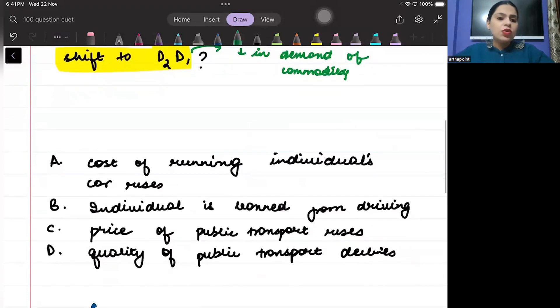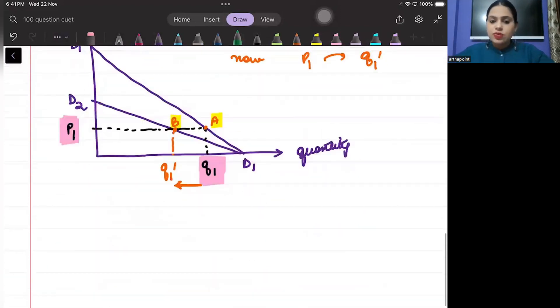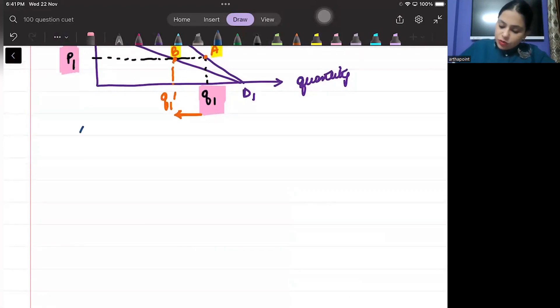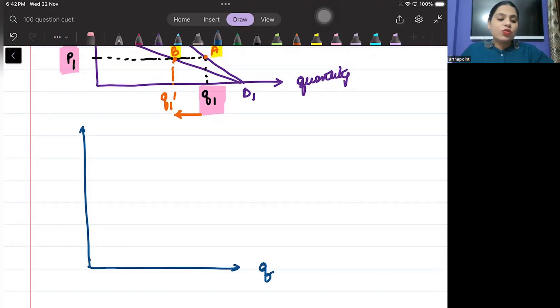Now, look at the second aspect. Suppose, I draw the same diagram. We are drawing the same diagram. And I am going ahead and I am taking quantity here and I am taking the price here. And now, again, I have this D1D1.